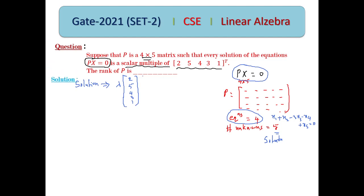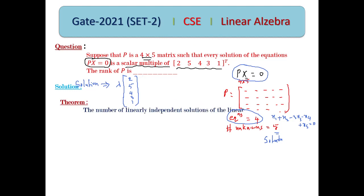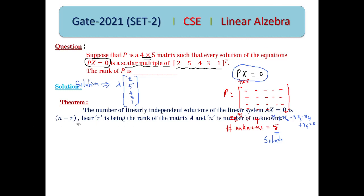Before entering the solution we need to know this theorem: the number of linearly independent solutions of the homogeneous system A·x = 0 is n − r, where r is the rank of the coefficient matrix and n is the number of unknowns.